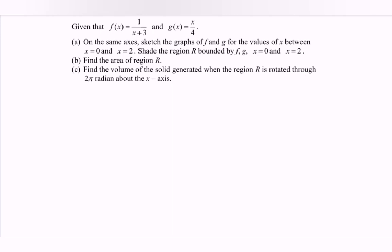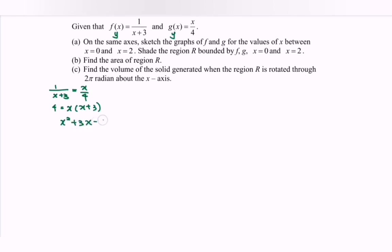First, we need to find the intersection point between the graphs. Since f(x) and g(x) both equal y at the intersection, we set 1/(x+3) = x/4. Cross-multiplying gives 4 = x(x+3), so x² + 3x - 4 = 0. Factoring: (x+4)(x-1) = 0, giving x = -4 and x = 1.